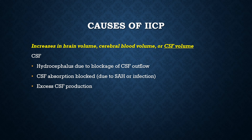Increases in our third element — the CSF — can also cause increased intracranial pressure. Increased production, reduced absorption, or other obstructions in the outflow of CSF can cause there to be too much CSF in the brain. For example, a subarachnoid hemorrhage, or SAH, can cause blockage to the subarachnoid spaces and reduce absorption of CSF in the brain.